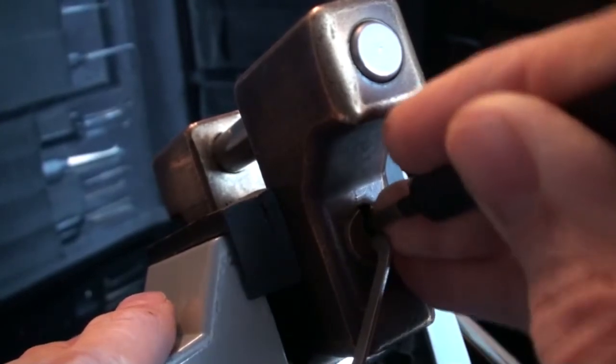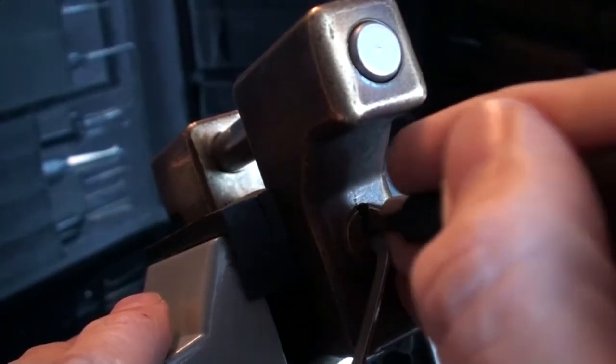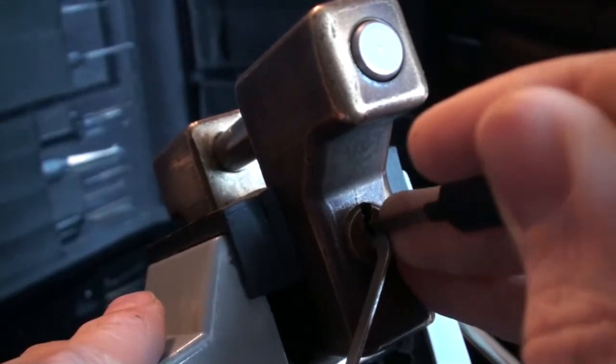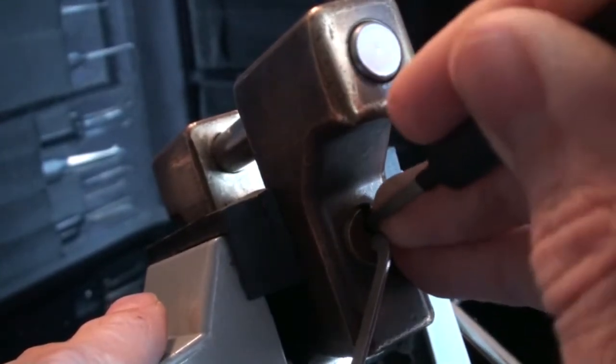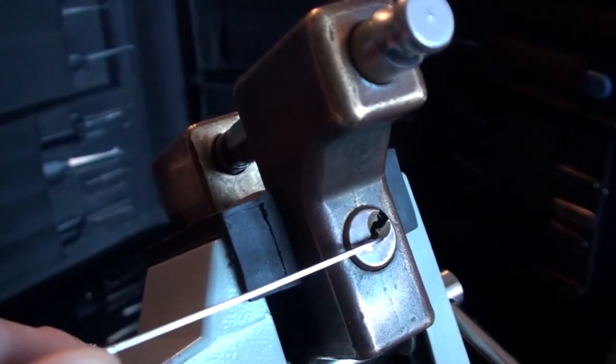We've got pin number three which is binding. Set that but we lost our false set. Touch number five and we'll get our false set back. And then we've got pin number two now. It's a spool. Counter rotation and the lock pops open.